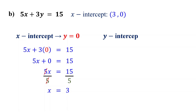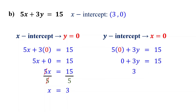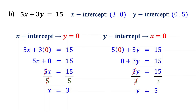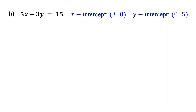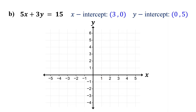The y-intercept occurs when x is 0. So, set x to 0 and solve for y. This simplifies to 3y equals 15. Dividing both sides by 3, you find that y equals 5. So, the y-intercept is 0 comma 5. Now, plot the intercepts on the coordinate plane. Plot the x-intercept at 3 comma 0. Plot the y-intercept at 0 comma 5.